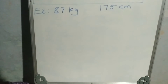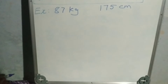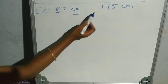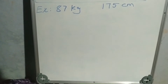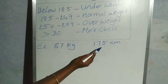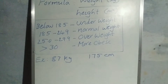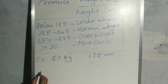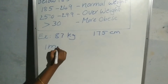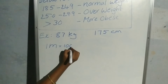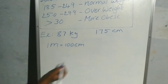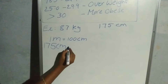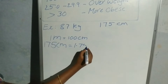Let's take an example where the weight is 87 kgs and the height is 175 cm. Now, this measurement is in centimeters. As per the formula, we have to change centimeters into meters. Since 1 meter equals 100 centimeters, 175 centimeters equals 1.75 meters.